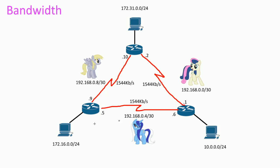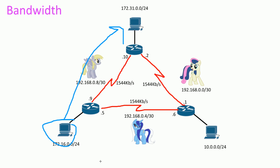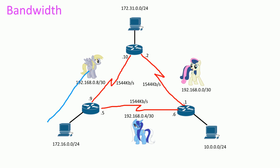Let's do a traceroute. A traceroute finds the path to the destination network — all the routers and devices in between — to determine what the actual path is for the communications.